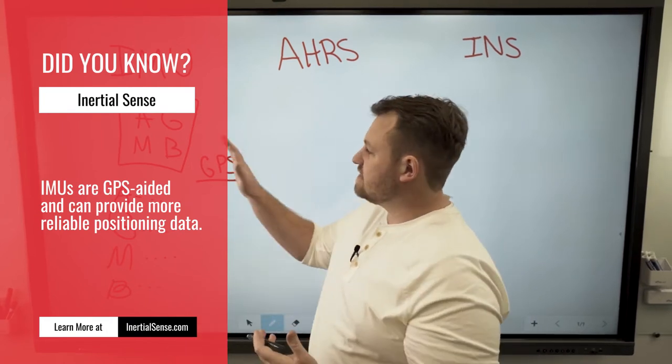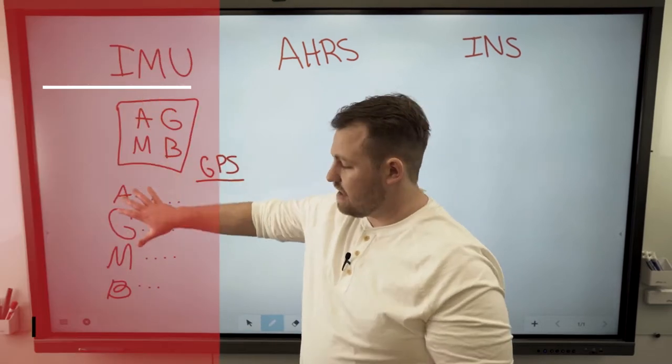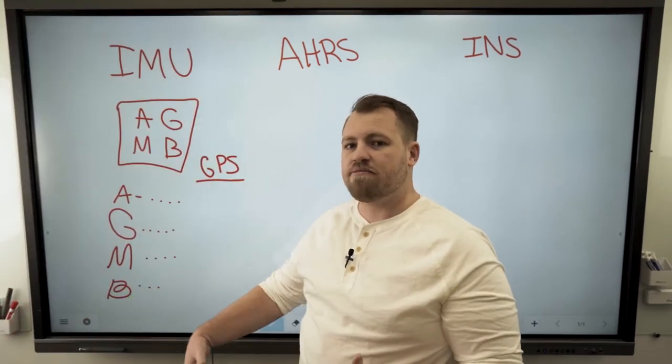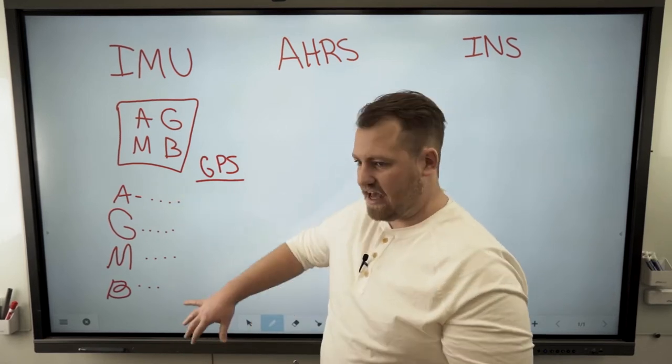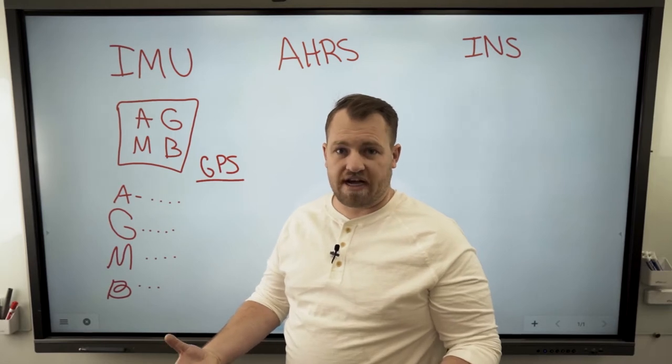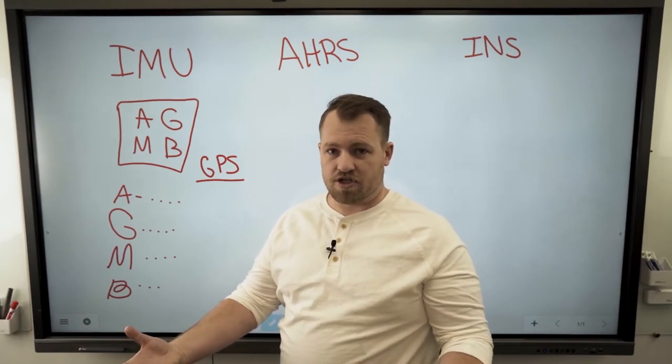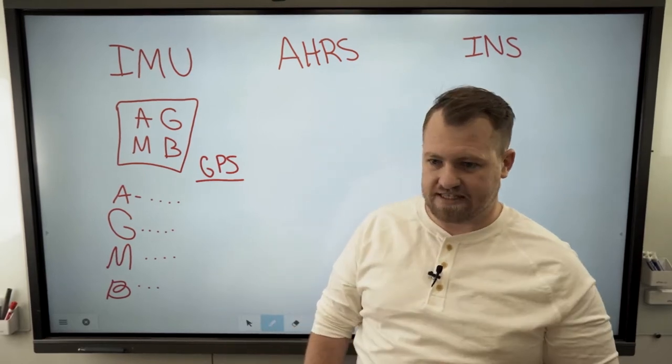What makes these other sensors better than the IMU is that they still have all this IMU data inside, but there's something we call a Kalman filter, which fuses all this data together and outputs something easier for customers and engineers to understand, which leads us to the AHRS or the Attitude Heading Reference System.